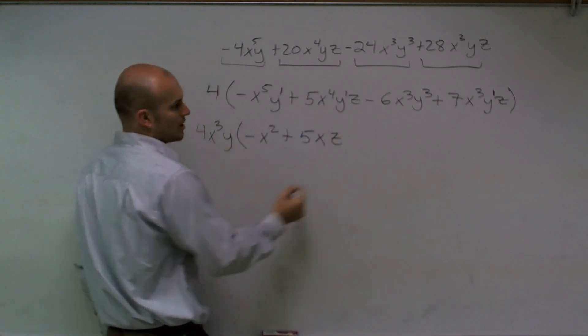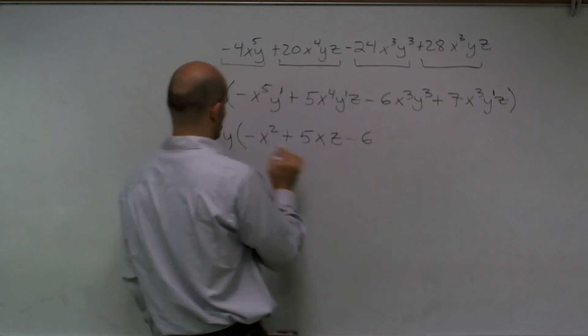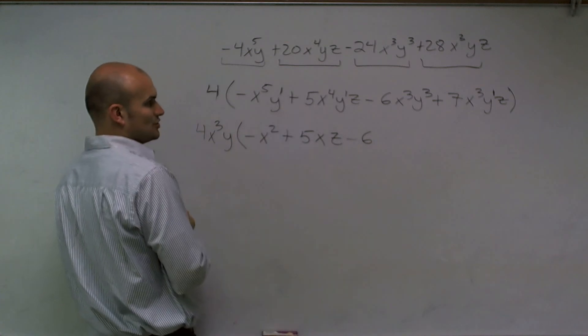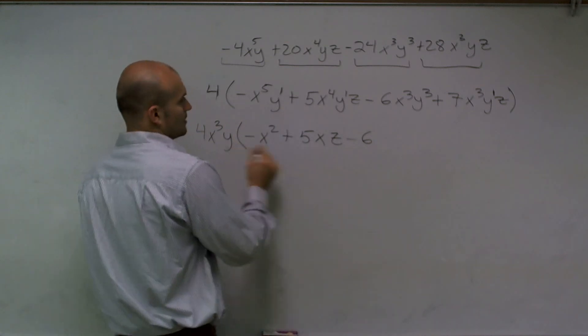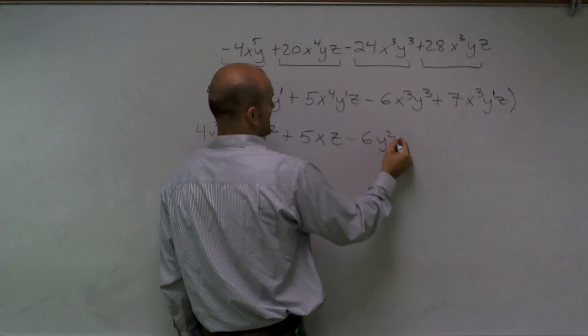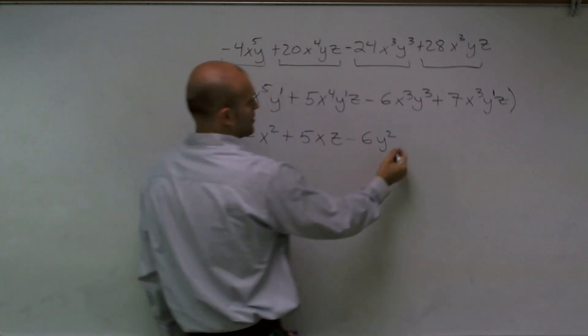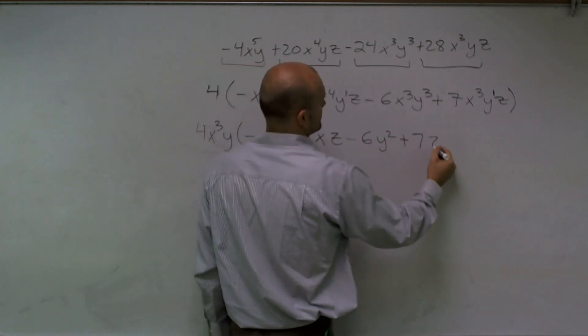Plus 5xz. Again, my y's will cancel out. So minus 6x cubed, factor out an x cubed from an x cubed gives me 1. Factor out a y from a y cubed gives me y squared, plus 7z.